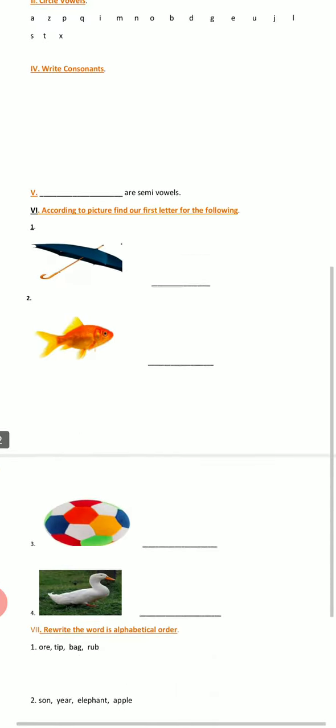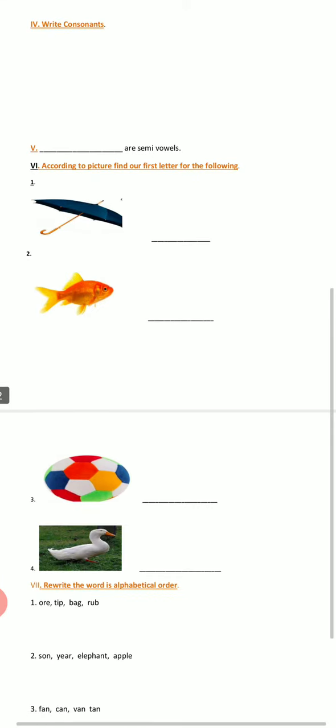Sixth task: according to the picture, find out the first letter of the following. Here we can see four pictures. You have to look at each picture, identify what it is, and write only the first letter of that picture.